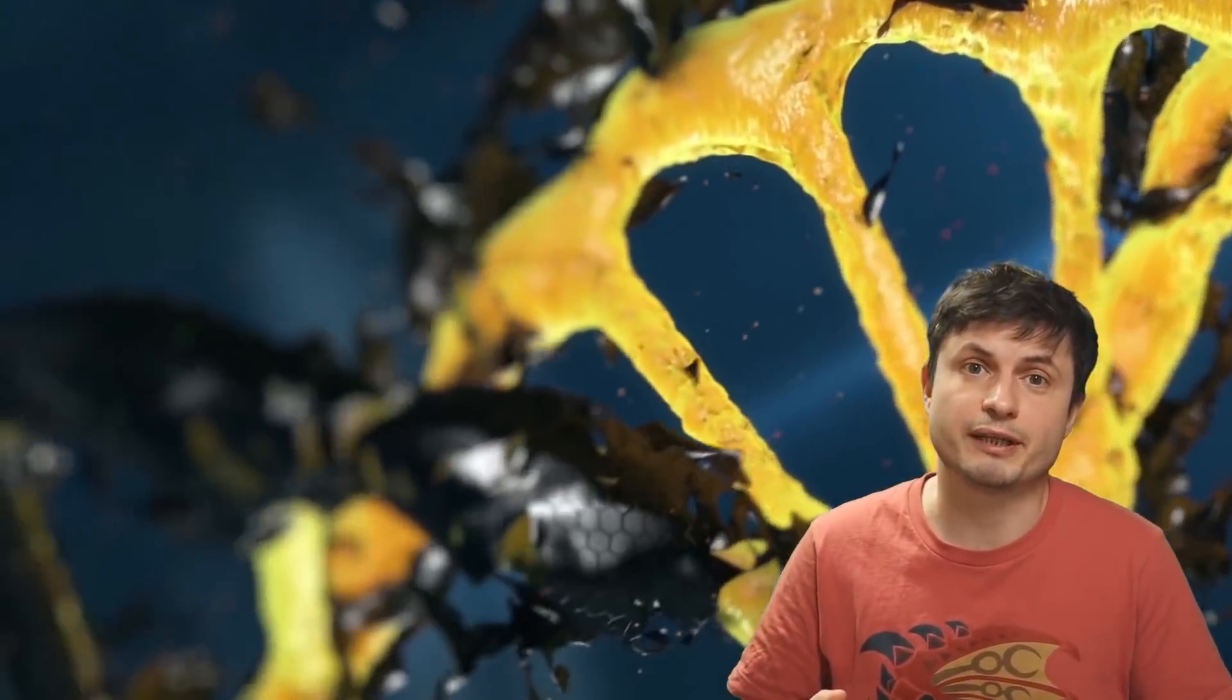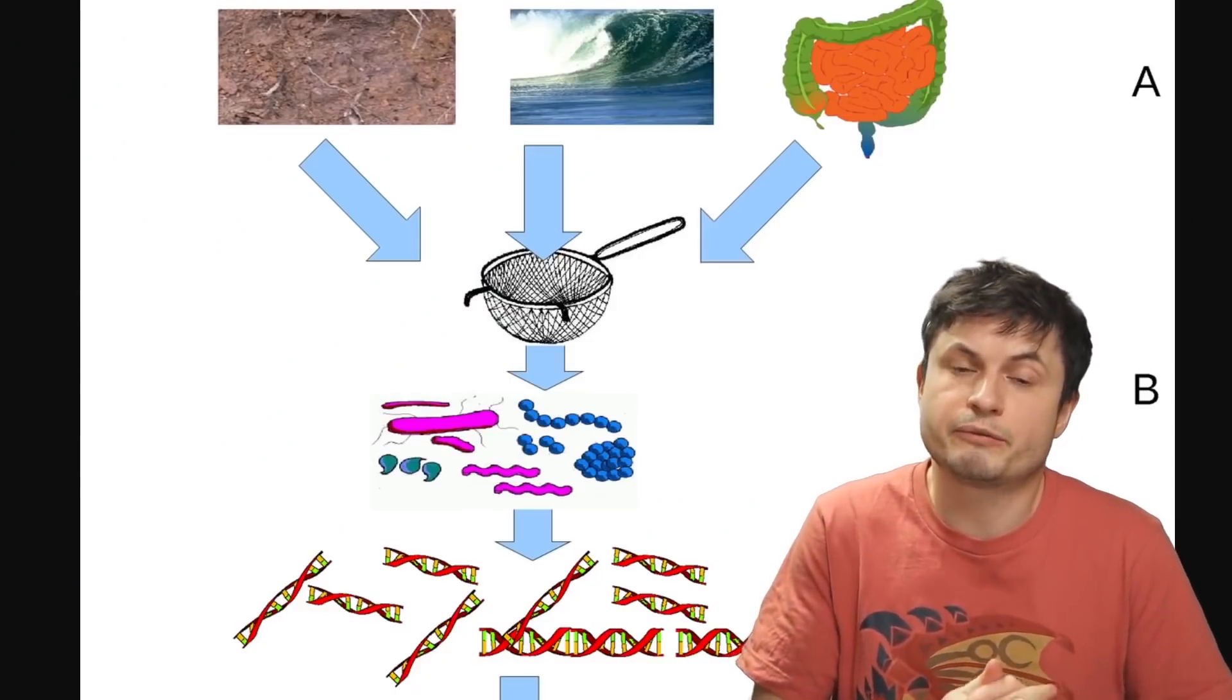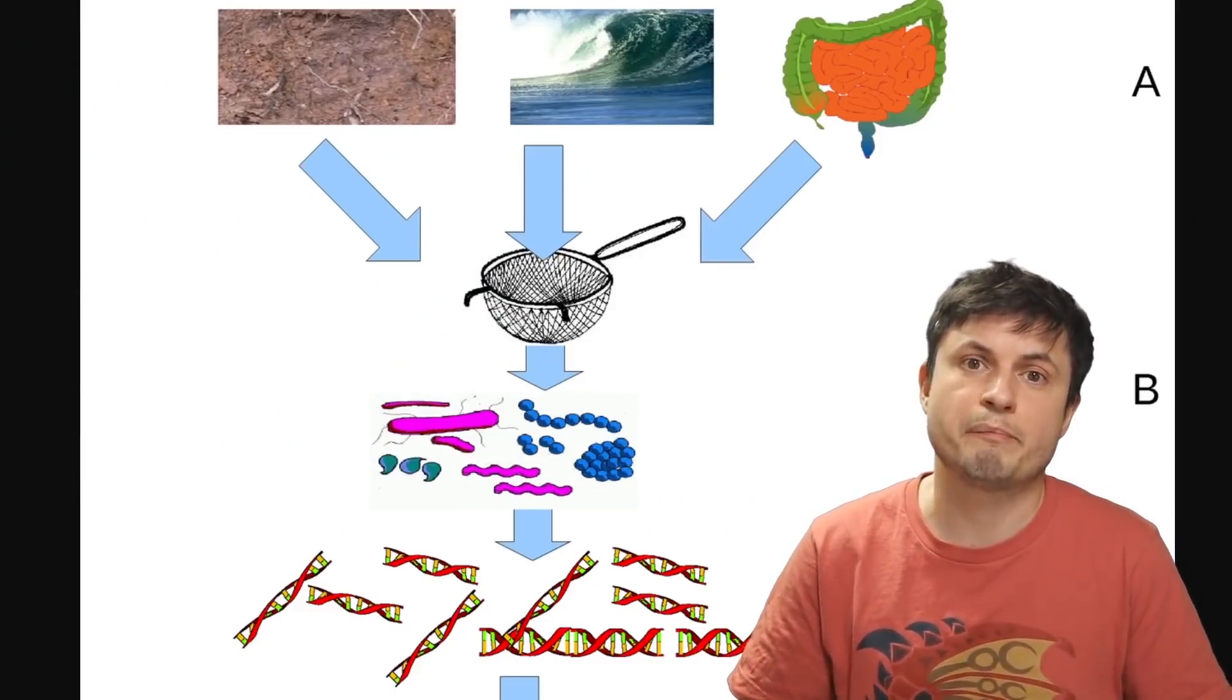And to get all of this data, well, the scientists had to actually do a lot of work. As I mentioned, they used about 28,000 samples. But unlike typical genetic research, here they used what's known as metagenomics.